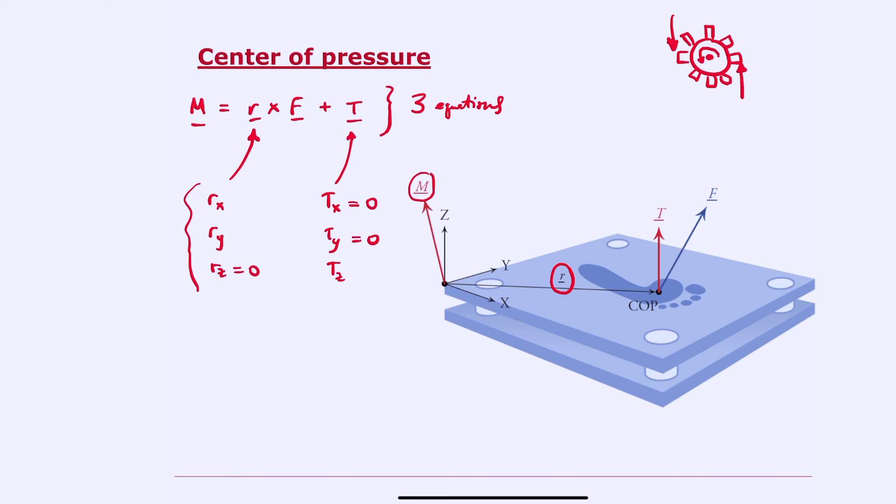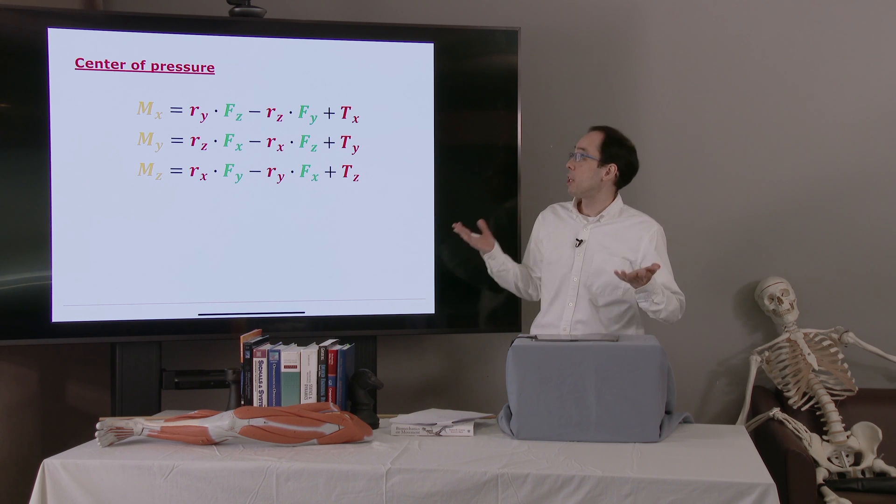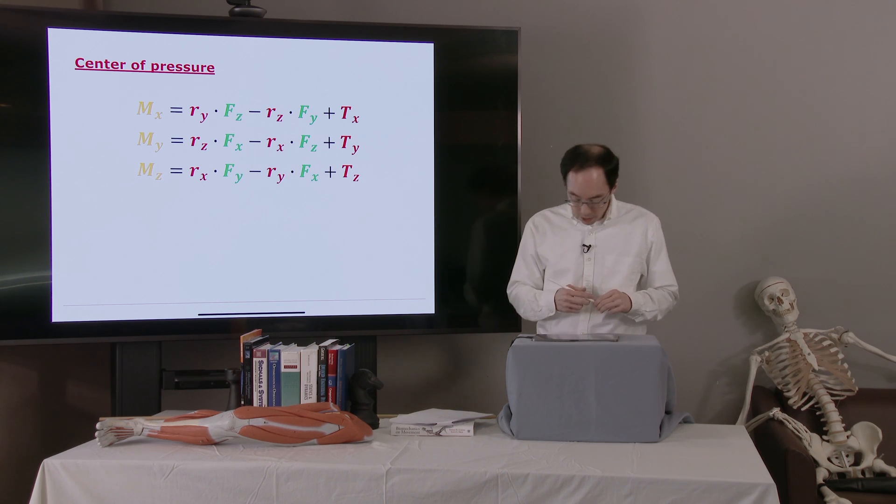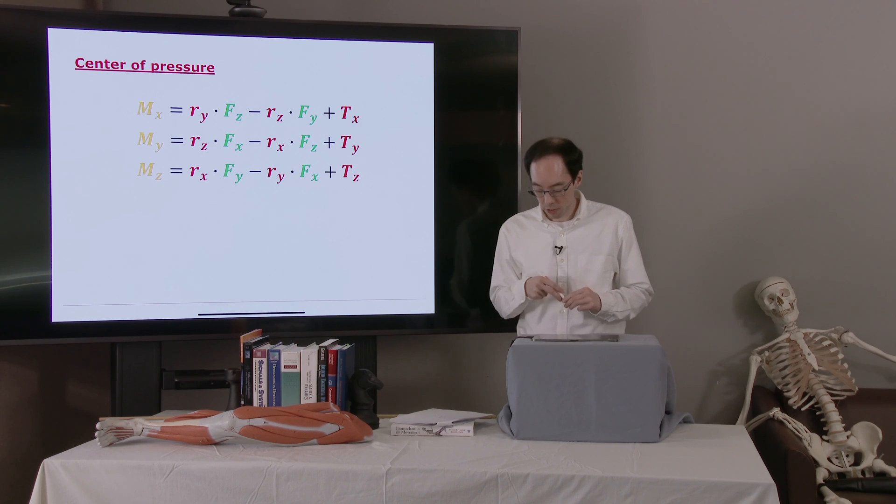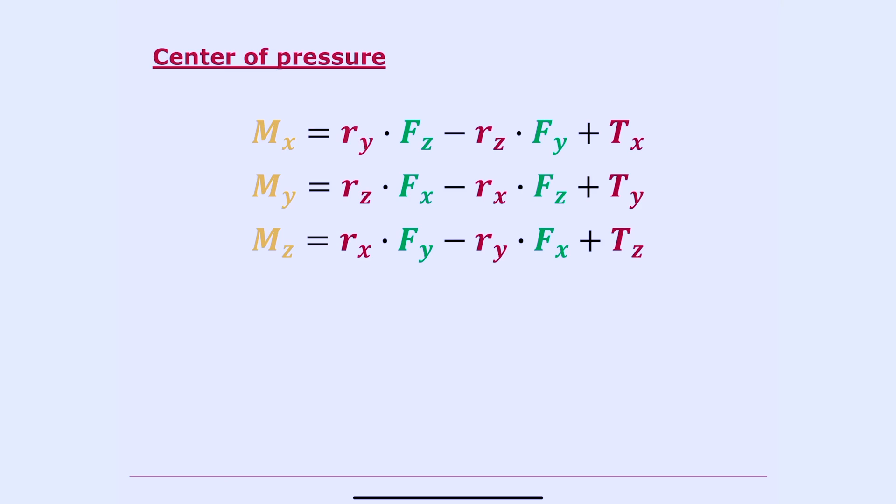So now we have three equations and three unknowns, and we can solve this system. Here are the equations. I've just written them out in full. And let's cross out all the things we know are zero. So we know that rz is zero. So this term disappears, this term disappears. We know that tx is zero, and we know that ty is zero. So now we can solve the system of equations.